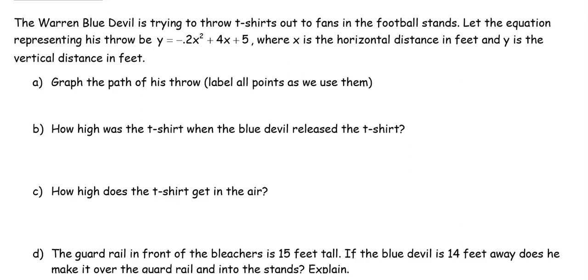Let the equation representing his throw be y = -0.2x² + 4x + 5, where x is the horizontal distance in feet and y is the vertical distance in feet. Our measurements are in feet, so we want to make sure we're always labeling things correctly. X is horizontal, y is vertical.